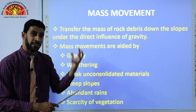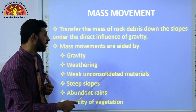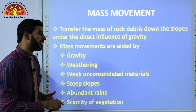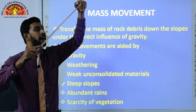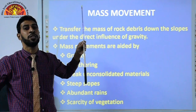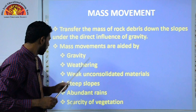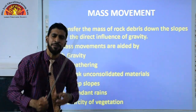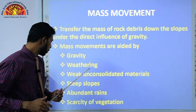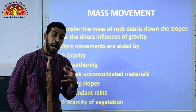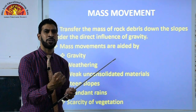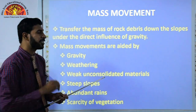Weak and unsolidated materials break apart because of weathering. On steep slopes, if a rock breaks and falls from above, it will definitely come down due to gravity. Heavy rainfall also causes rocks and materials to fall. In areas with fewer trees and plants, the climate tends to be more extreme, and this breaks down the rocks further.